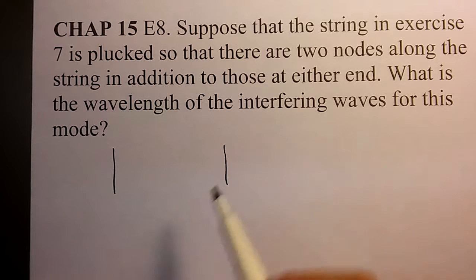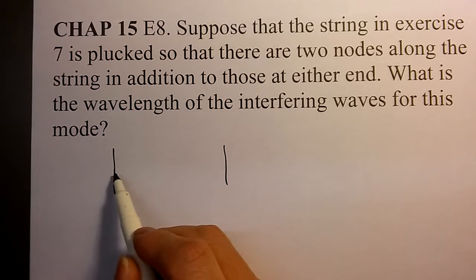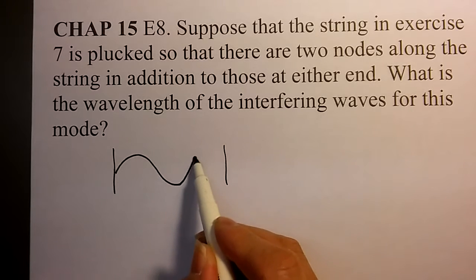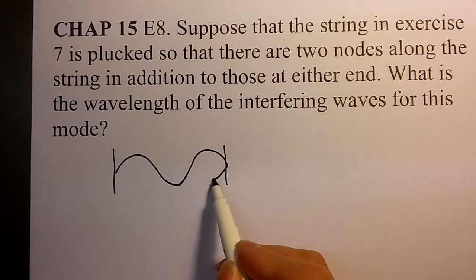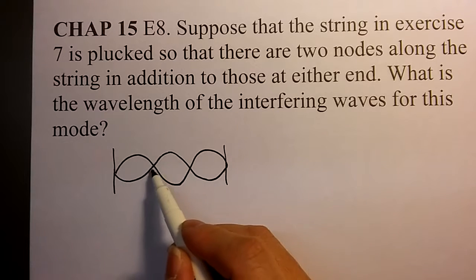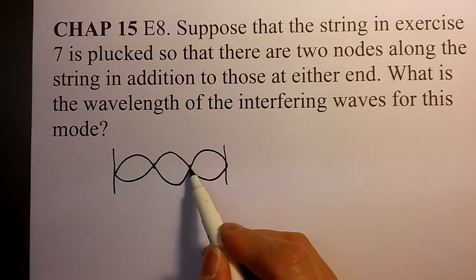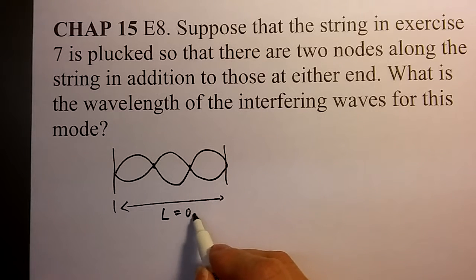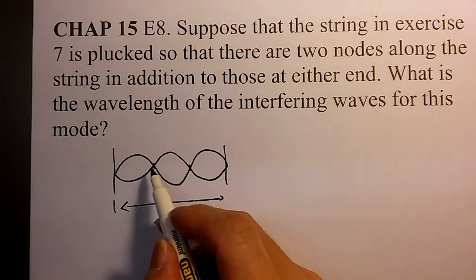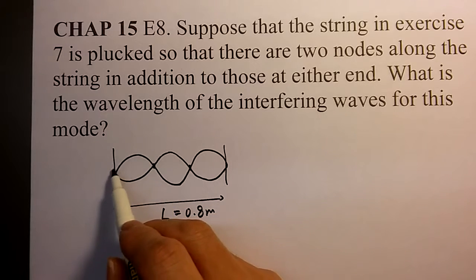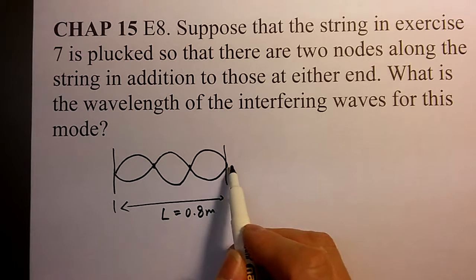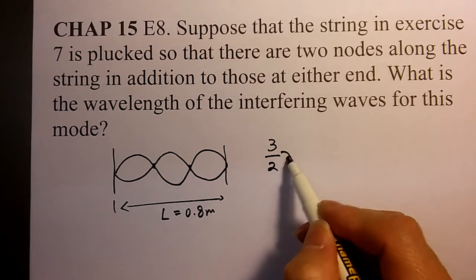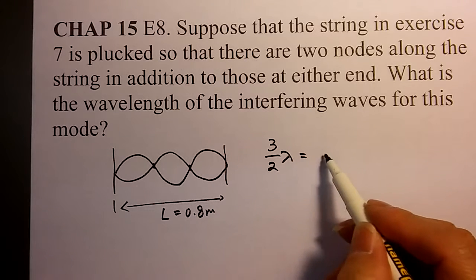In this case, in order to get two nodes, this is one node and two nodes. The length is the same, 0.8 meters, and then this full length is one and a half wavelengths, right? So 3 over 2 lambda equals your length,